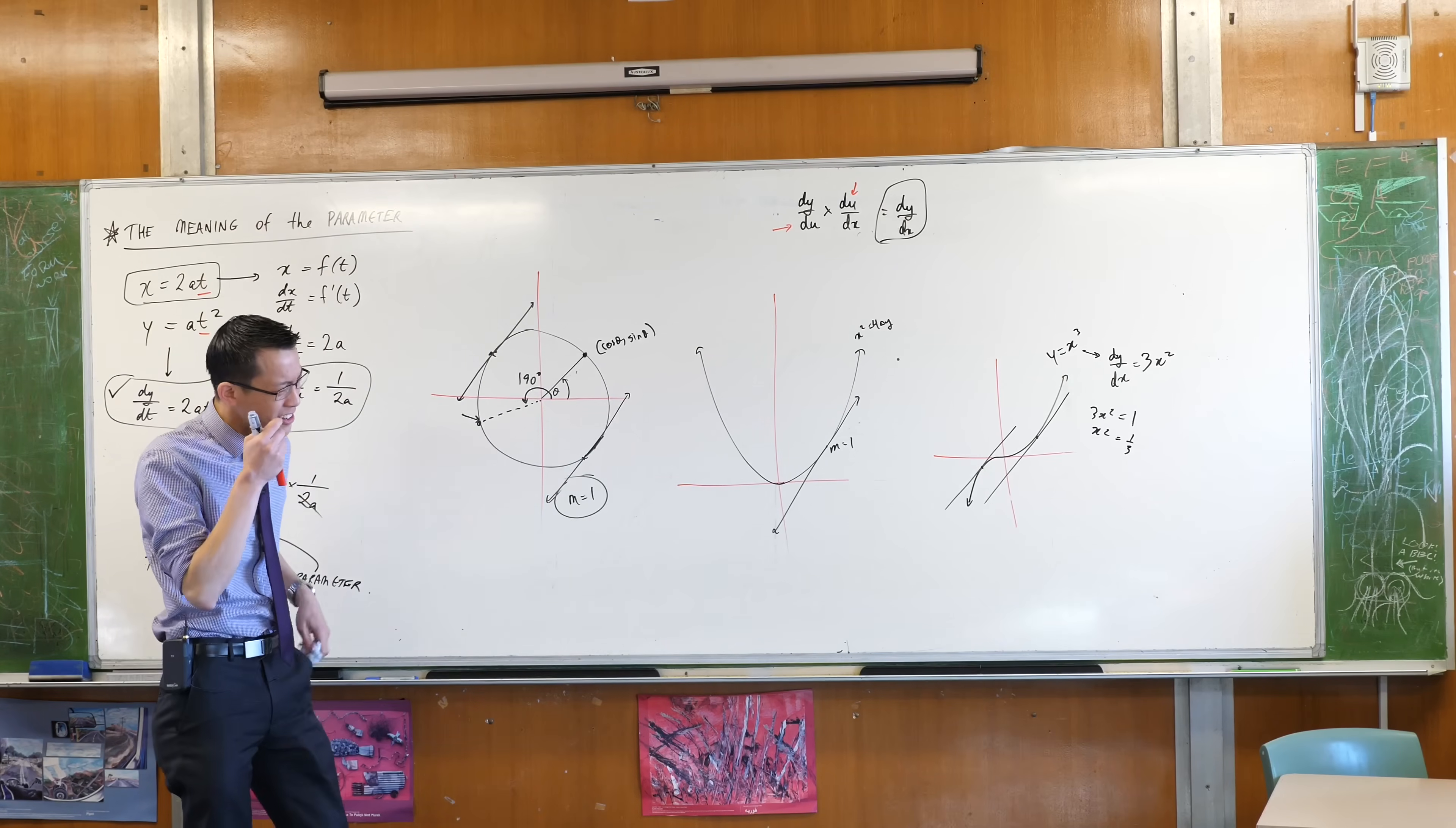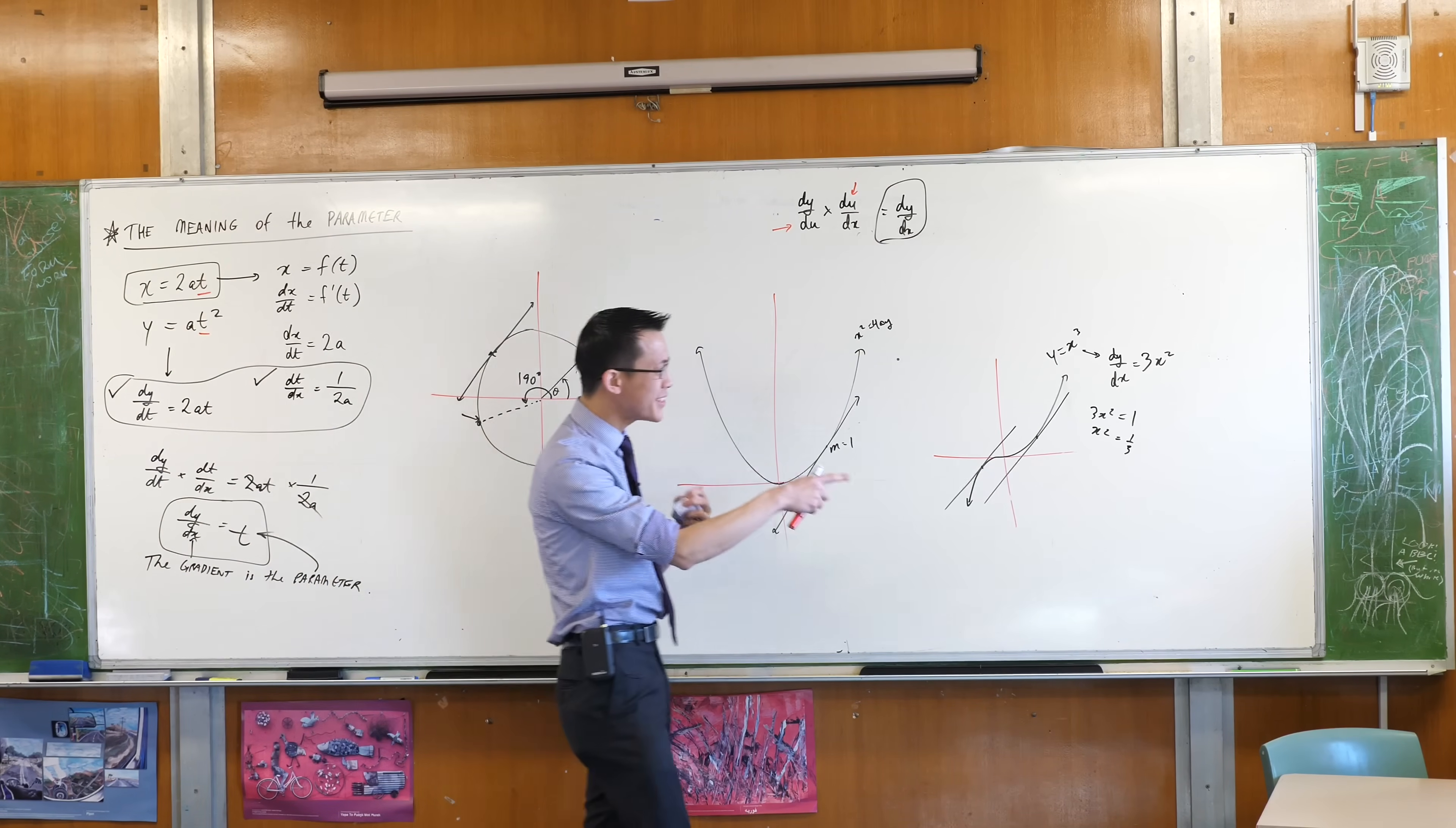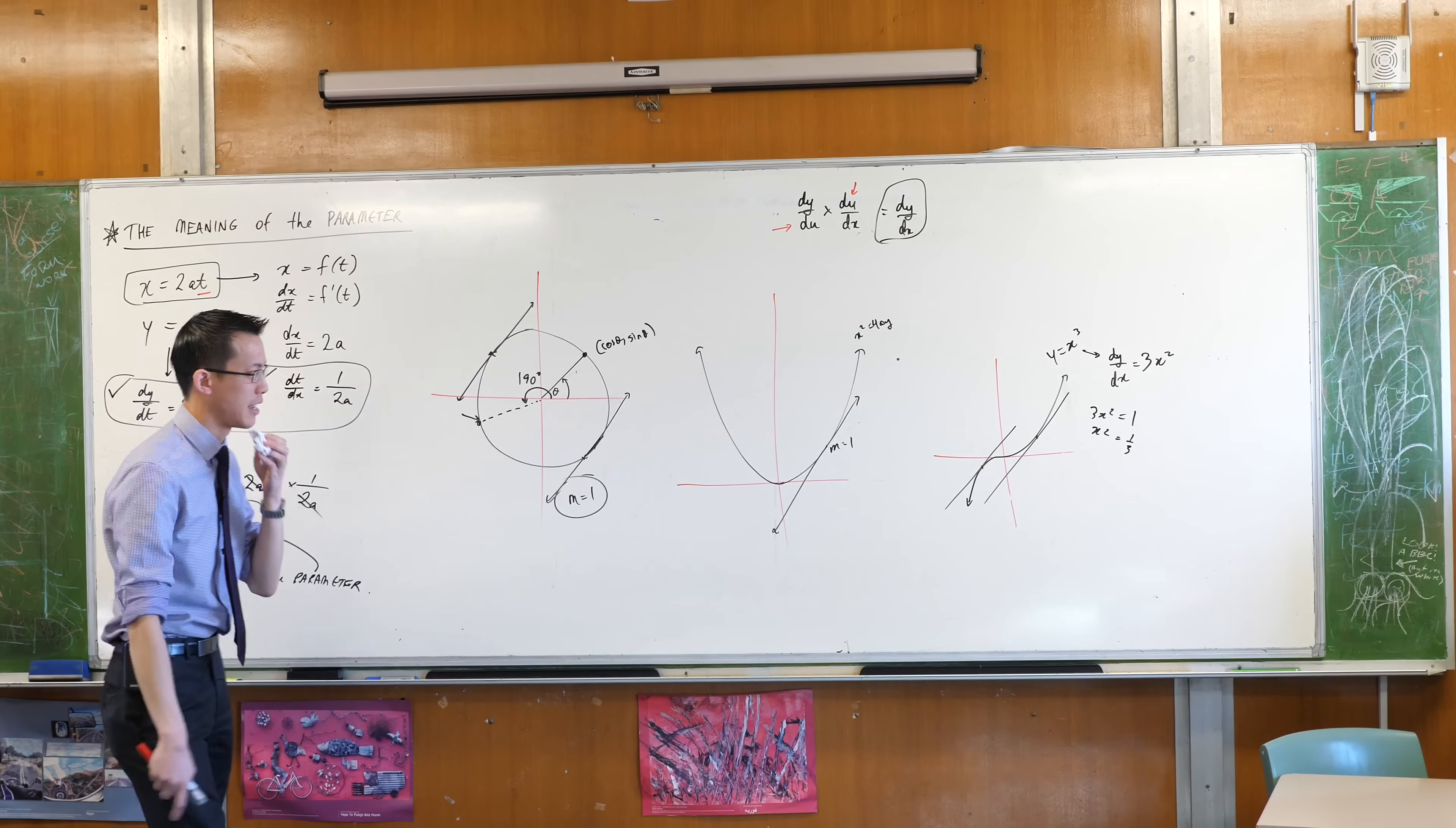So when you're solving for when this derivative is equal to a certain thing, like when it is equal to 1, then of course, you're going to find two solutions because you always get two solutions out of this kind of quadratic, presuming there is a solution at all.